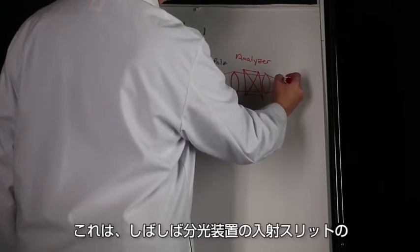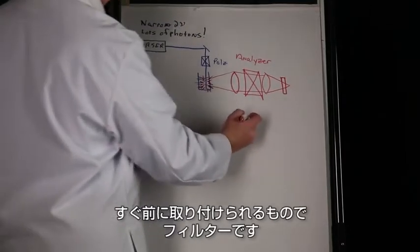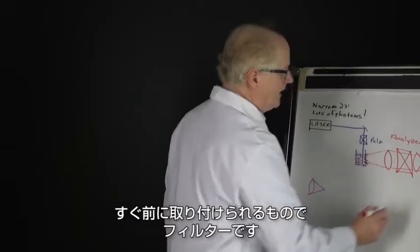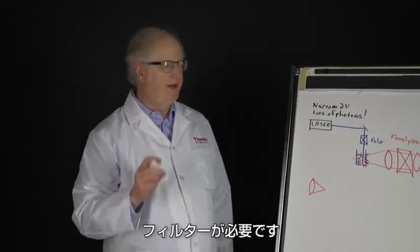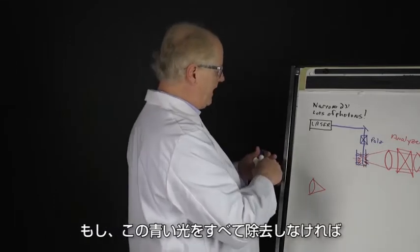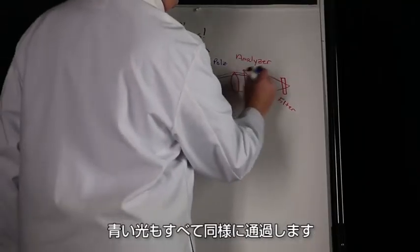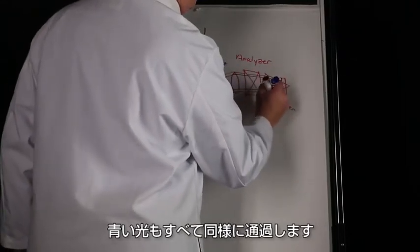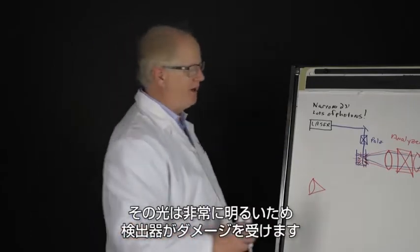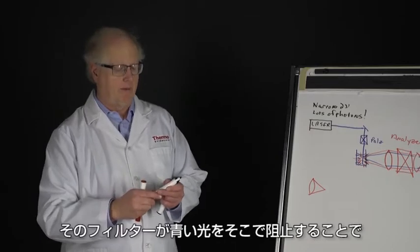The other thing that I'm going to put in there, and this is frequently put just right in front of the entrance slit of the spectrometer, is my filter. I have to have a filter, remember, to eliminate that Rayleigh light, because if I don't eliminate all of this blue light, all of that blue light if it got through to the detector would be so bright it would burn it up. But from this point on the only thing I'm going to get through is the red light. I'm going to be stopping that blue right there by that filter to protect my system.